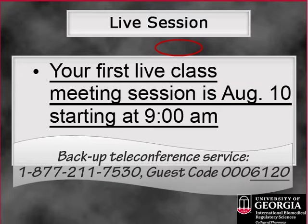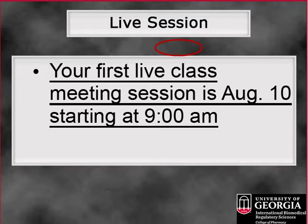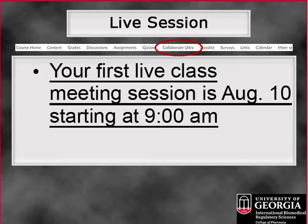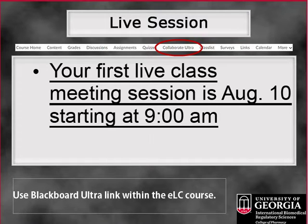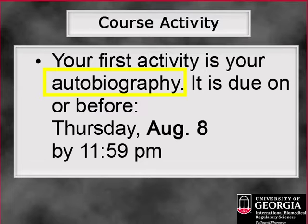A teleconference option is available as a backup only. Directions for both the webinar and the backup teleconference are noted within your ELC course. From the course homepage, go to the section entitled Course Documents. There you will find directions labeled PHAR 6120 Collaborate Ultra Sessions and Teleconference Backup Instructions.